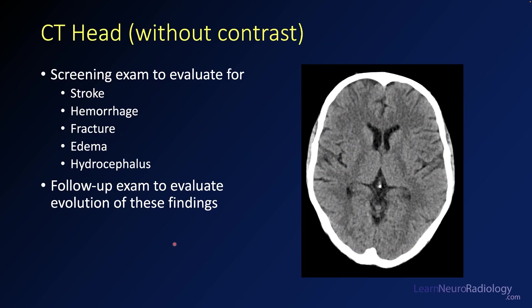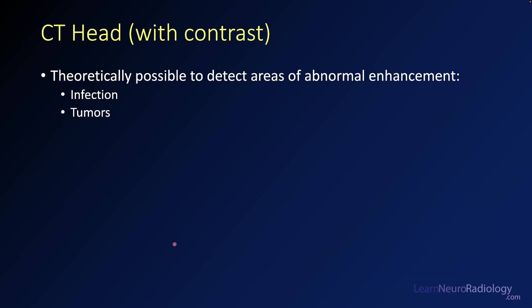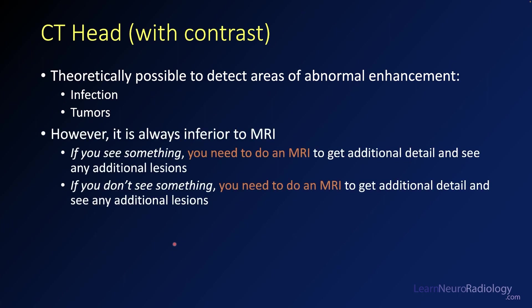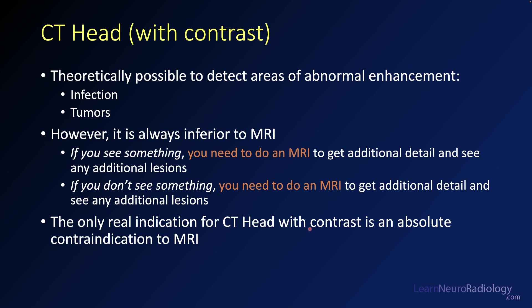CT is also used as a follow-up examination to examine the evolution of findings — for example, if you know someone has hydrocephalus, you can follow it up over time. CT of the head with contrast is theoretically possible to detect enhancement from infection or tumors, but in practice it's almost always inferior to MRI. Whether or not you see something, you're going to need an MRI for additional detail. So if you can help it, skip the contrast CT and go straight to MRI.